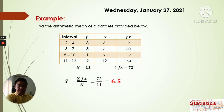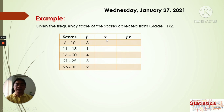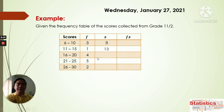Now we have a second example. We have given the frequency table of scores collected from Grade 11. We have the scores, the frequency, and we're going to find the midpoint — the mid-interval — and the product between the frequency and the midpoint. So we find x first. What is the midpoint of 6 to 10? That would be 8. Then 11 to 15 is 13. 16 to 20 is 18. 21 to 25 is 23. And 26 to 30 is 28.